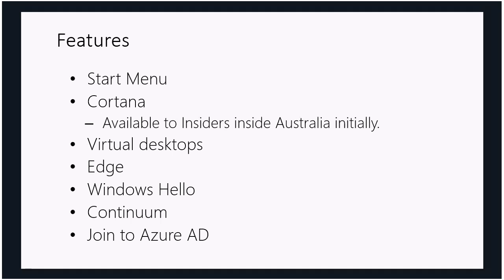One of the most exciting features in Windows 10 is the ability to domain-join directly to Azure AD. We've talked about how Office 365 has Azure AD underneath it — now we can connect Windows 10 machines directly via the domain join option to Azure AD. This shows that Microsoft is looking to move its identity management for devices and PCs into the cloud using Azure AD.